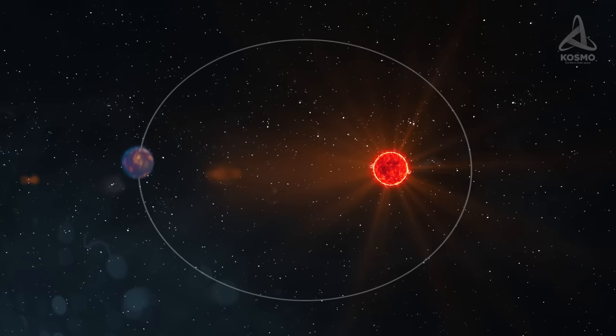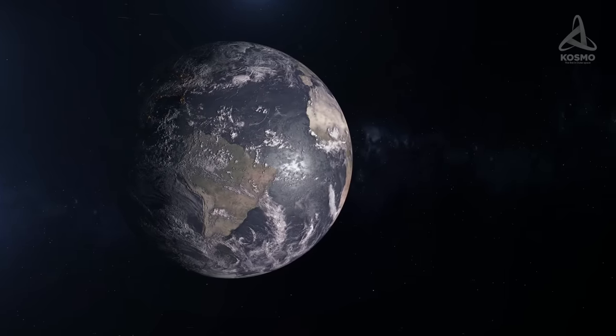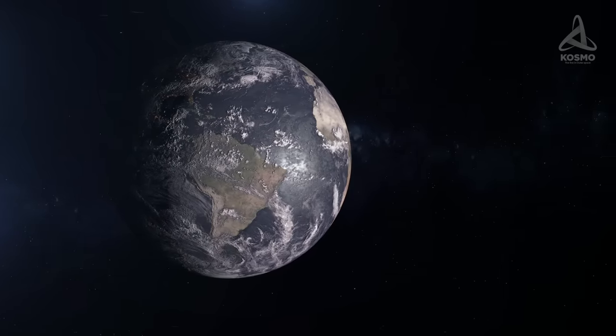It will be winter on Gliese 832 c at the furthest point from its parent star, and summer at the closest approach. The tilt of the rotational axis with respect to the ecliptic plane will not be of such importance as it is in the case of the Earth.